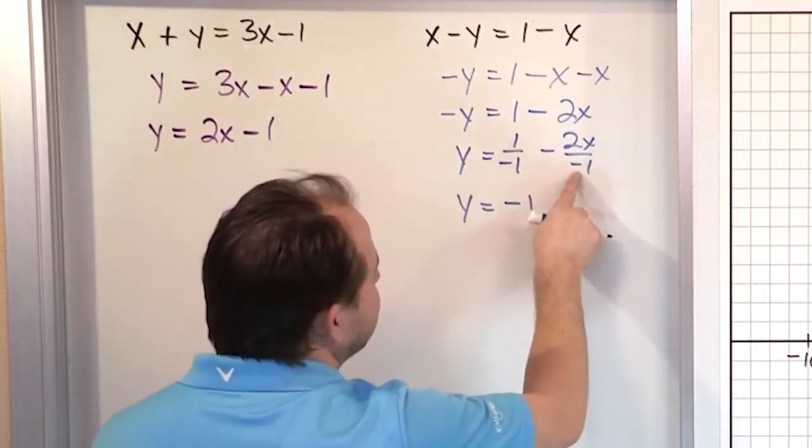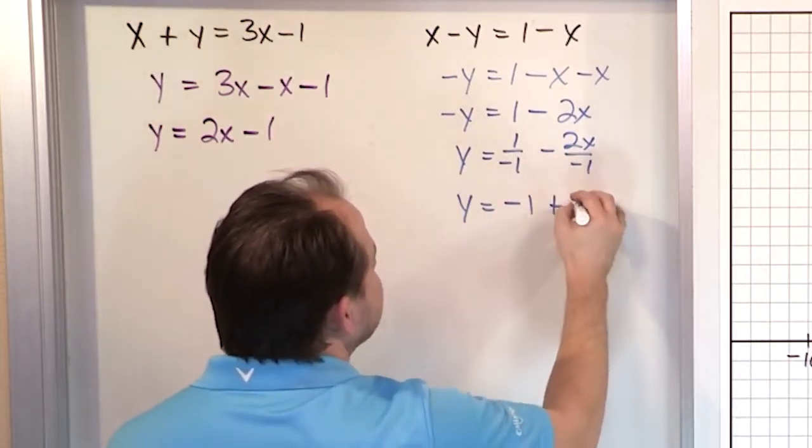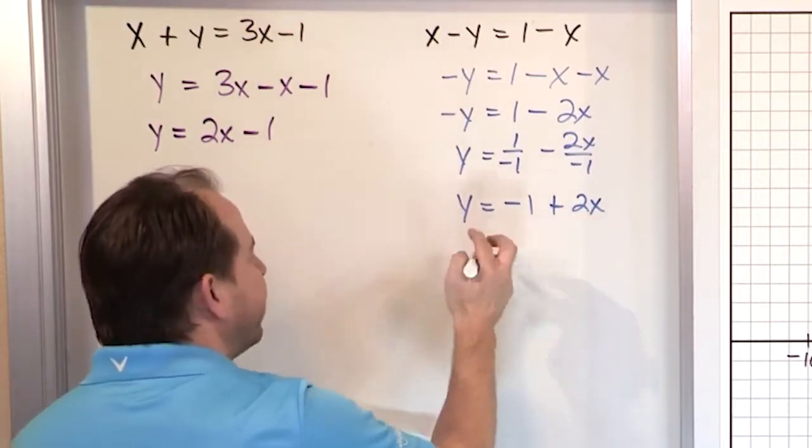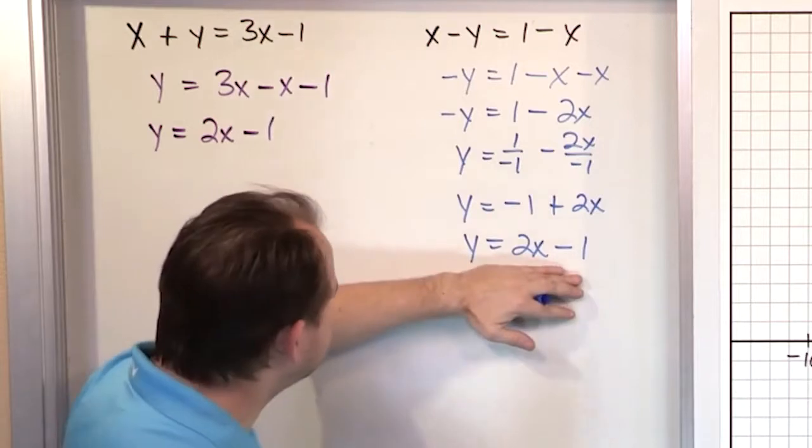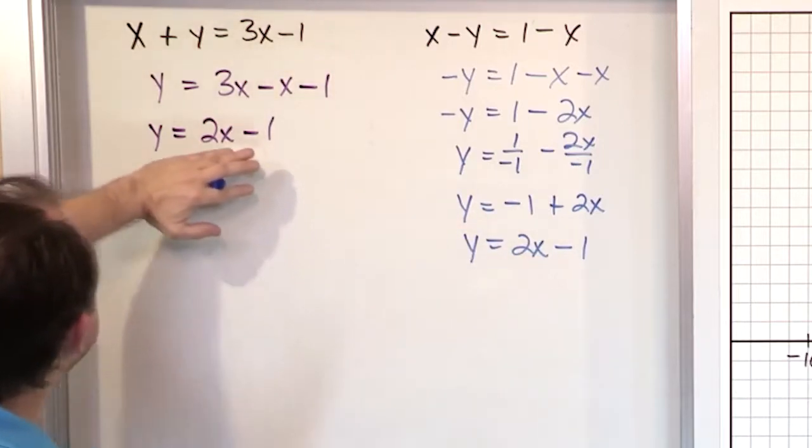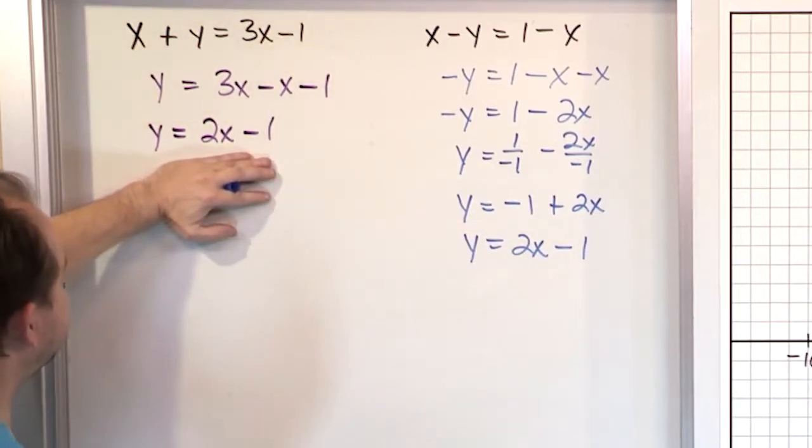Now these become a positive because they're multiplied together there, so it would be positive 2x. And then, of course, I'm going to switch the order here. It would be 2x minus 1. So I get y is equal to 2x minus 1, and that's exactly what I had for the other equation over here.